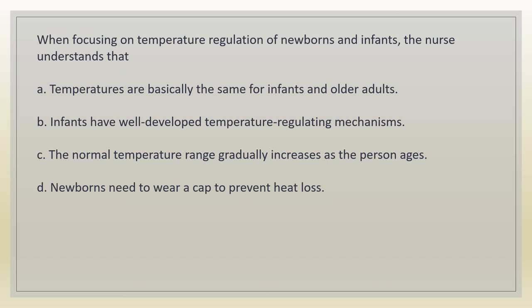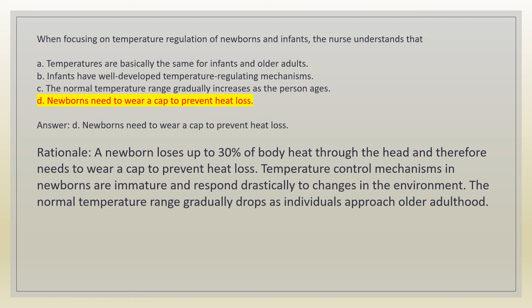When focusing on temperature regulation of newborns and infants, the nurse understands that: a. temperatures are basically the same for infants and older adults. b. infants have well-developed temperature regulating mechanisms. c. the normal temperature range gradually increases as the person ages. d. newborns need to wear a cap to prevent heat loss. Answer: d. Rationale: a newborn loses up to 30% of body heat through the head and therefore needs to wear a cap. Temperature control mechanisms in newborns are immature and respond drastically to changes in the environment. The normal temperature range gradually drops as individuals approach older adulthood.